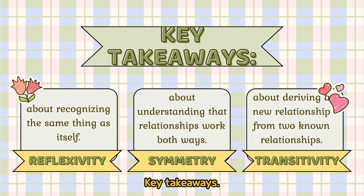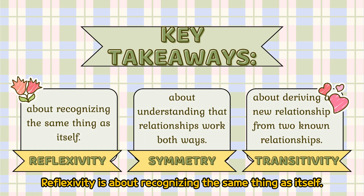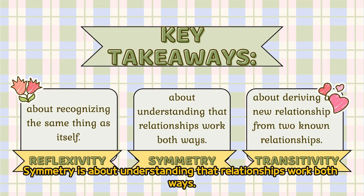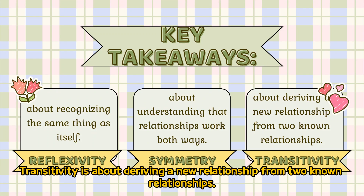Key takeaways: Reflexivity is about recognizing the same thing as itself. Symmetry is about understanding that relationships work both ways. Transitivity is about deriving a new relationship from two known relationships.